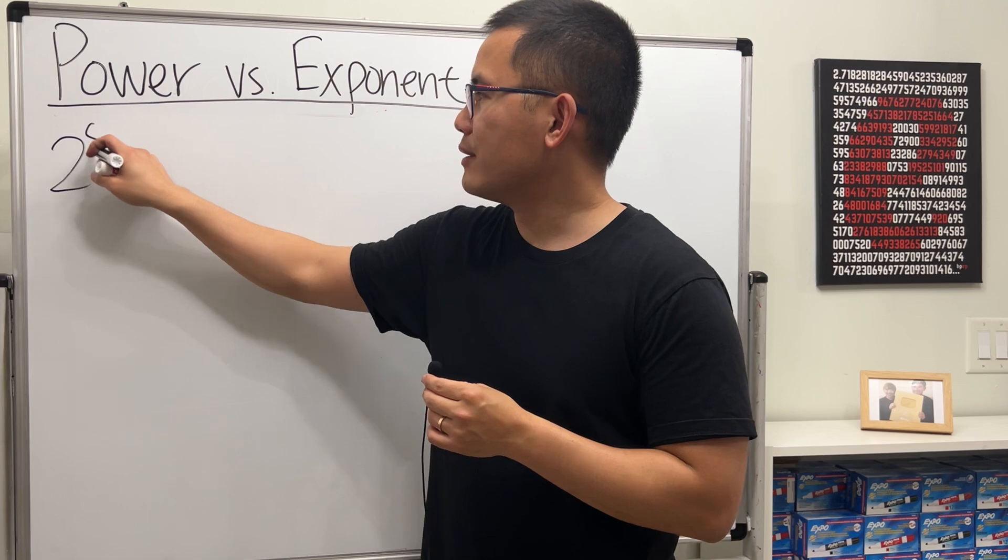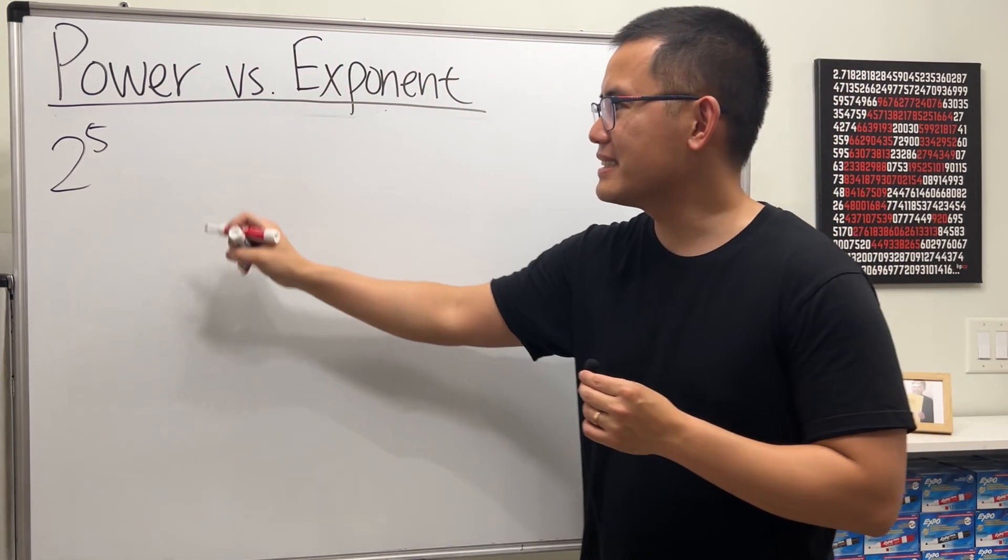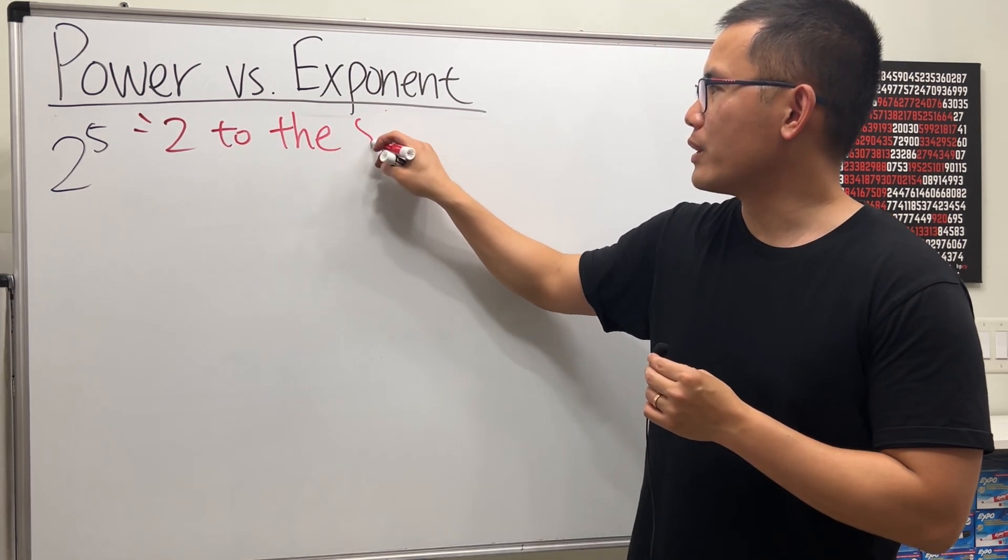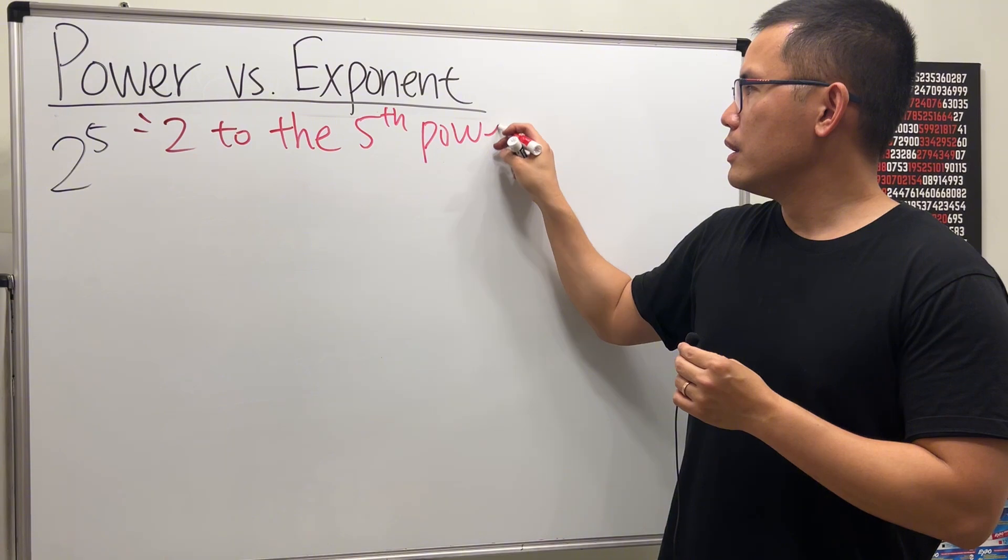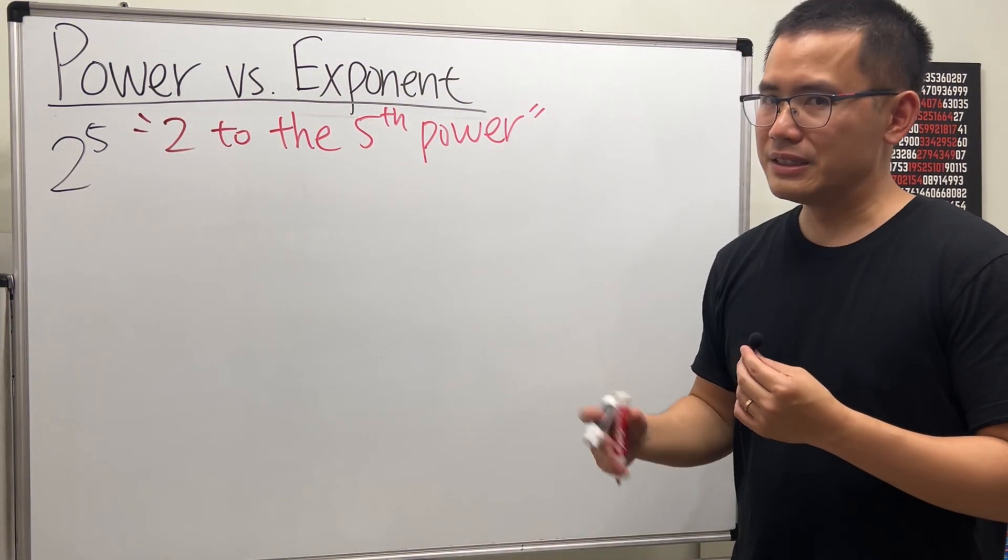Suppose I write this down. How would you say it? Well, one way to say it is 2 to the 5th power. Or of course, you can also say 2 to the power of 5. Same thing.